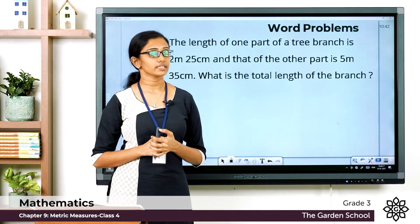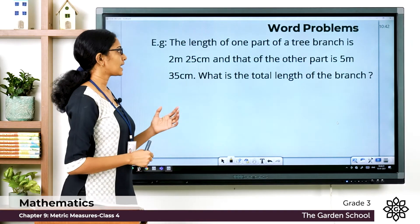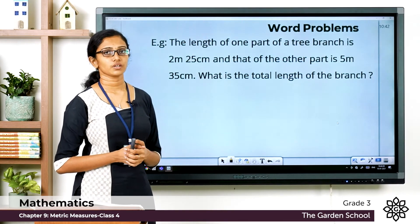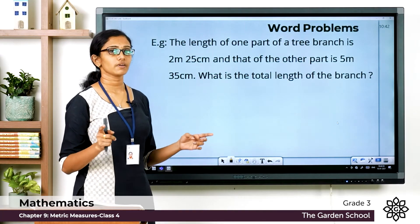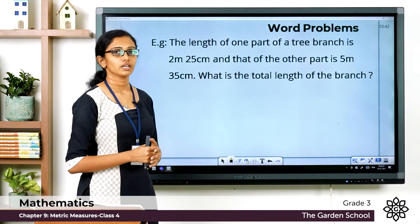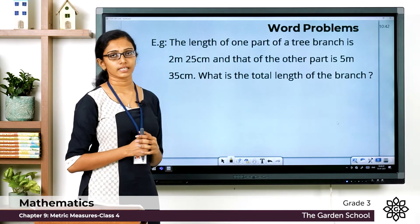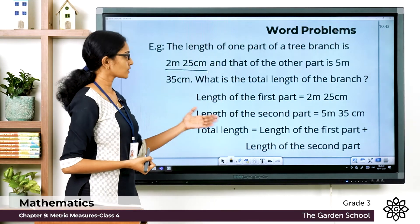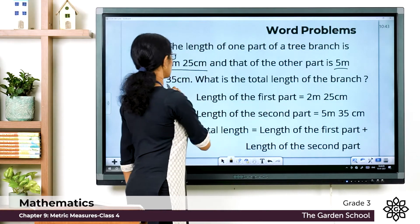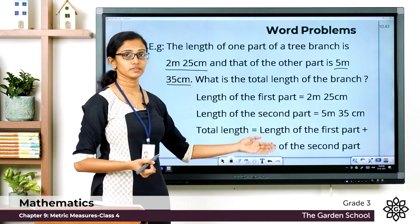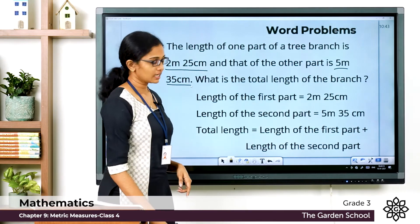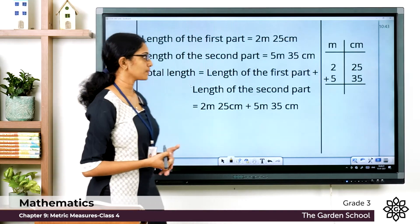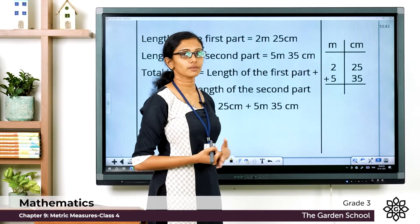The length of one part of a tree branch is 2 meter 25 centimeter and that of the other part is 5 meter 35 centimeter. What is the total length of the branch? You are given two measurements — the branch is divided into two parts and you need to find the total length by adding them. The length of the first part is 2 meter 25 centimeter and the length of the second part is 5 meter 35 centimeter. Total length equals length of first part plus length of second part.